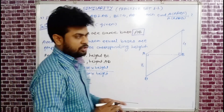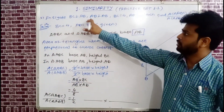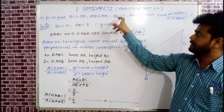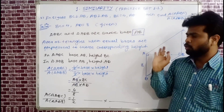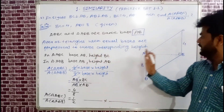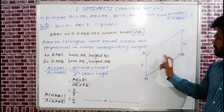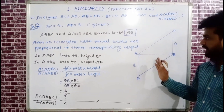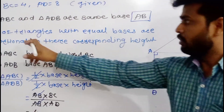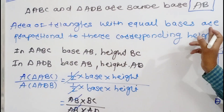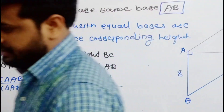In the second example, BC is perpendicular to AB and AD is perpendicular to AB. Since both triangles ABC and ADB share base AB (equal bases), their areas are proportional to their corresponding heights BC and AD.